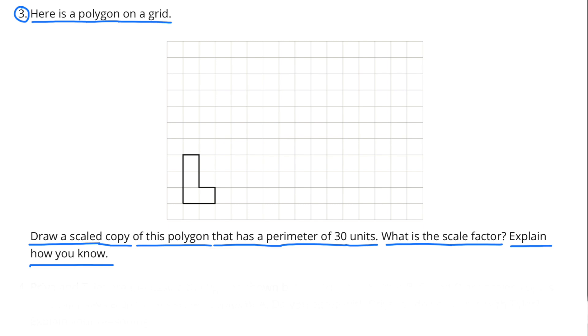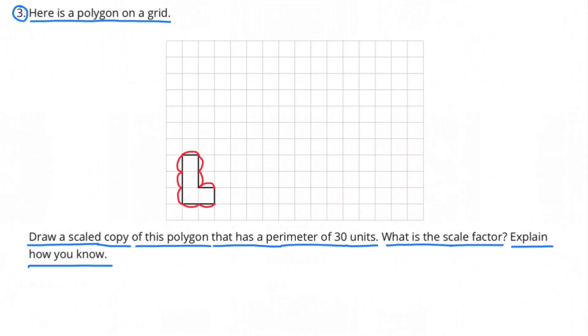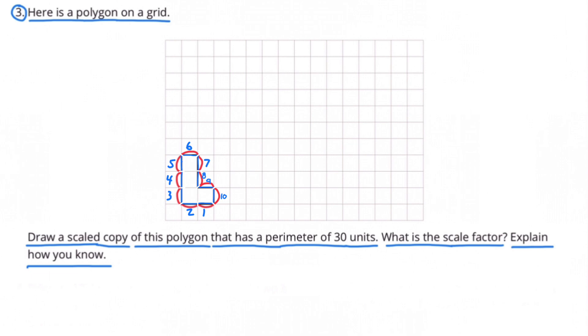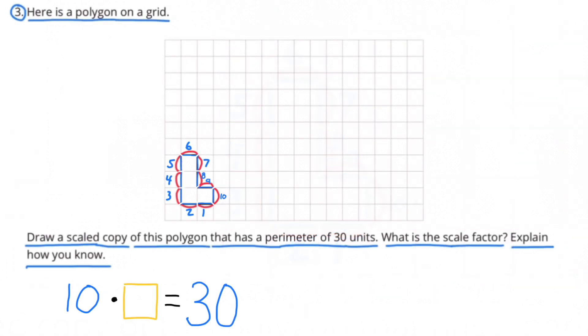First I want to find out how many units are in the perimeter. The original shape has a perimeter of 10 units. They're asking me to draw a scaled copy that has a perimeter of 30 units.